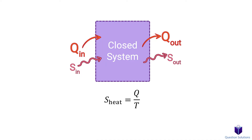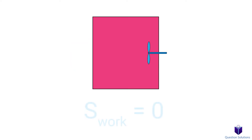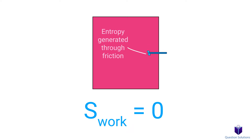We can write this in rate form with a dot on top. Make sure to remember that work does not create entropy transfer. However, it's possible that work might create friction or other less useful forms of energy, which can create entropy through heat.